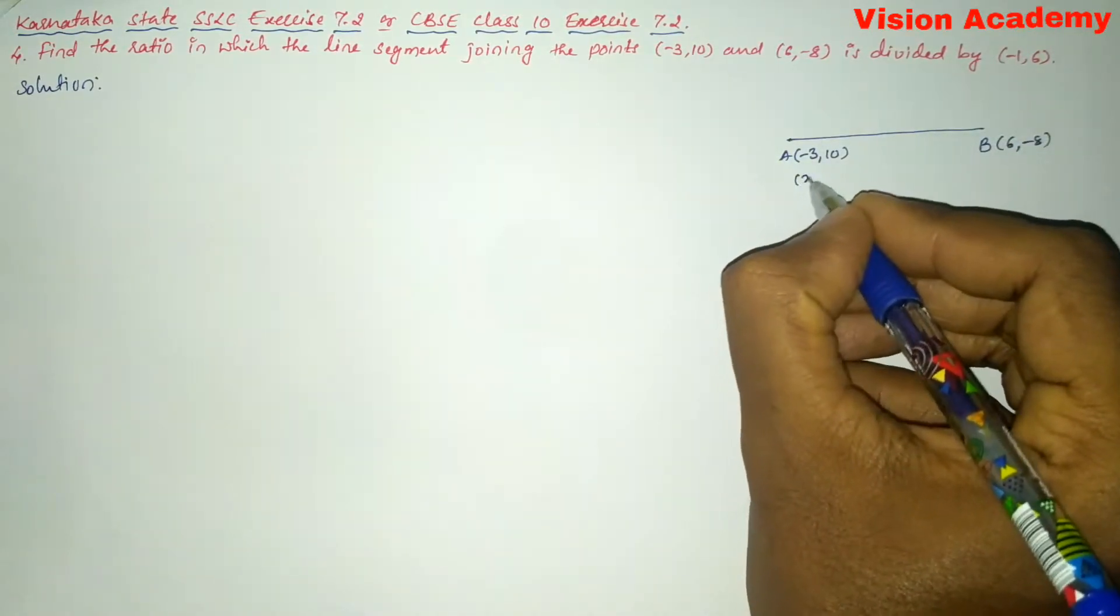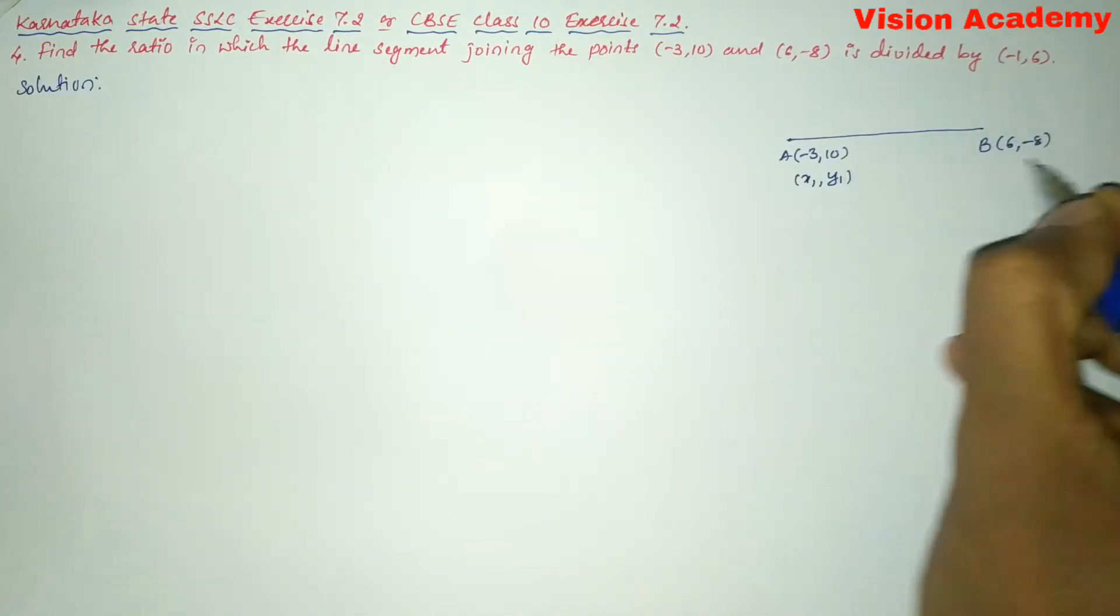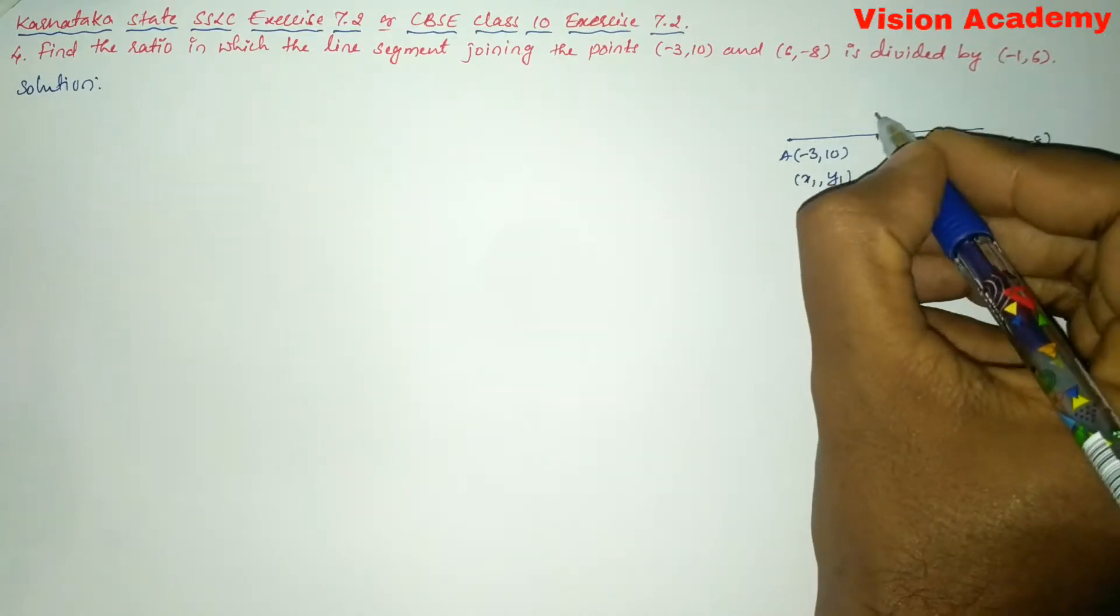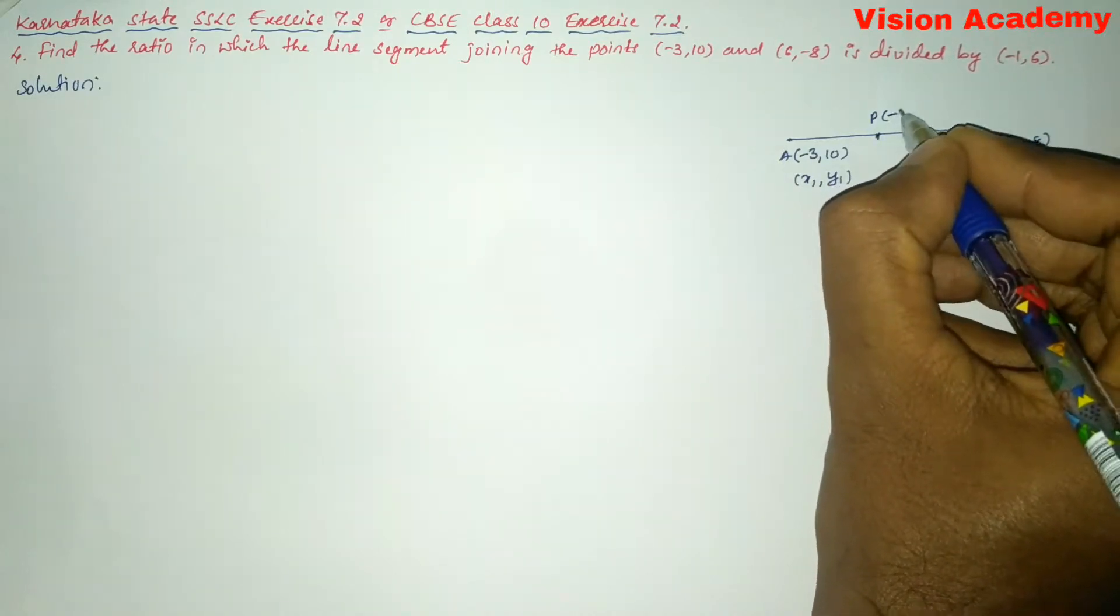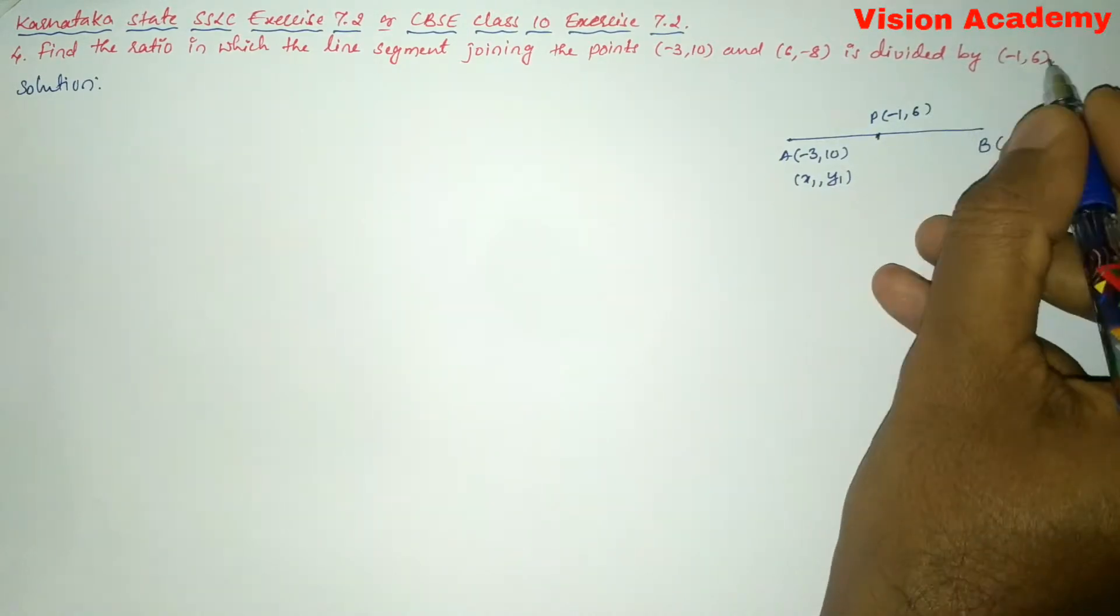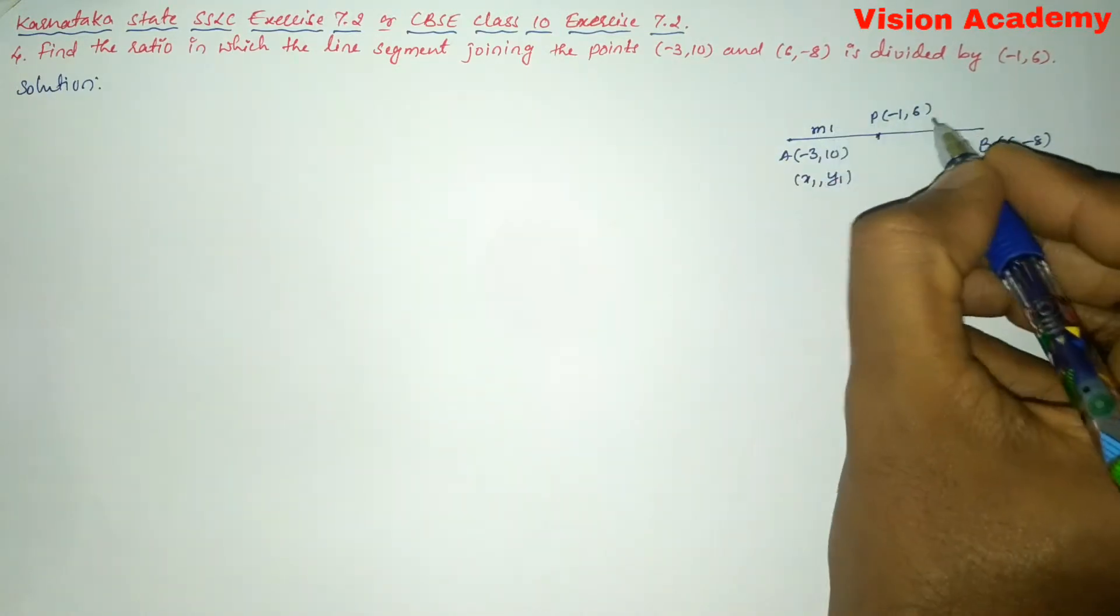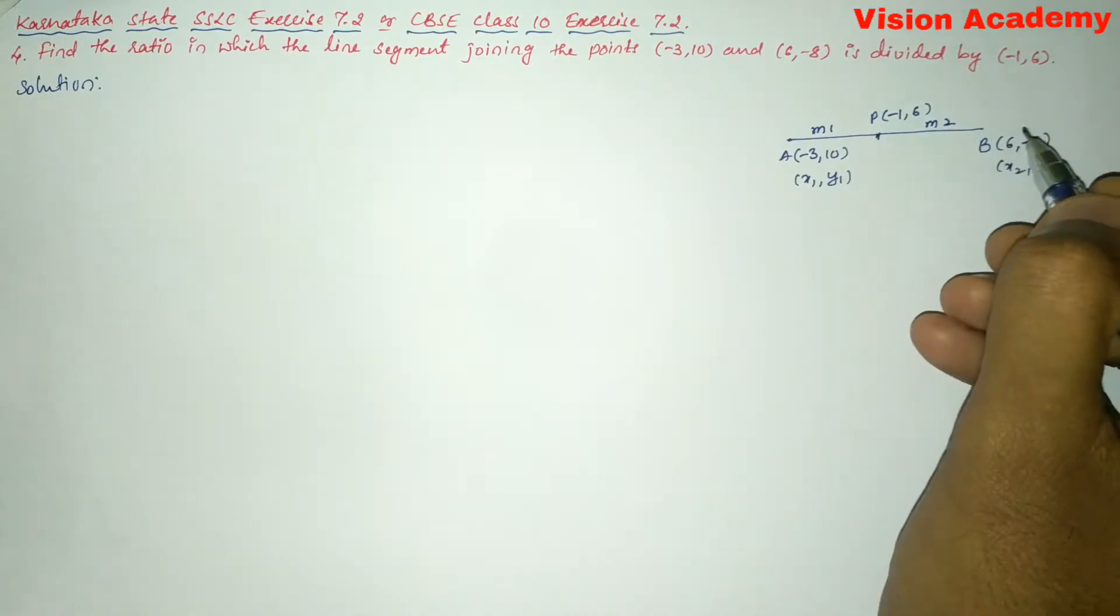Let us take this one as x1, y1 and this one as x2, y2. There is a point called P whose coordinates are (-1, 6) which is given in the question, which divides the segment in the ratio M1 to M2.